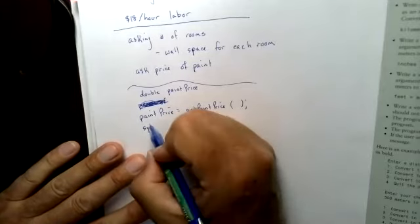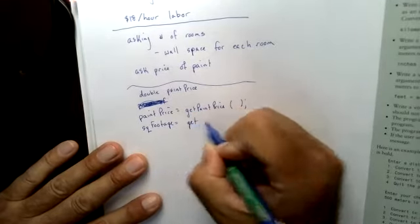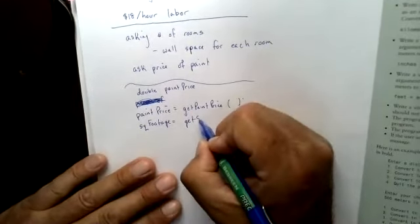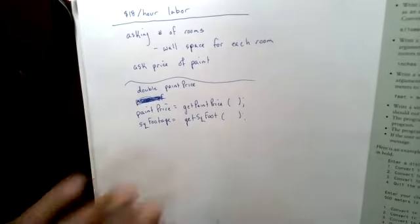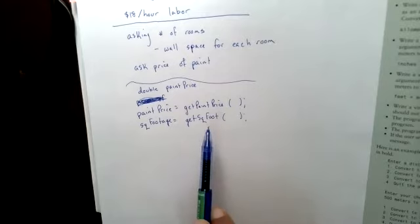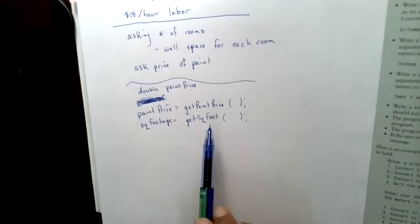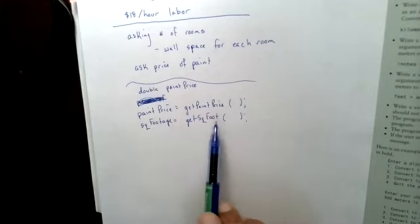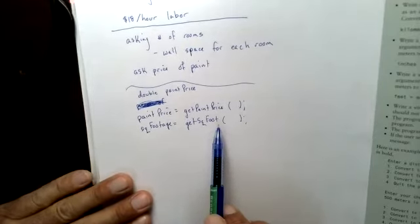Paint price. Get the paint price. Next thing I need is this total square footage. So I'm going to call a function, get, I might as well stay with the same thing so I don't get confused. Get square foot. Now, what am I doing in square footage? I'm going to ask how many rooms are there, and then I'm going to have a loop to ask the user to keep telling me how many total square feet there are. So this square footage is going to be for all the rooms. So there's going to be a little bit of work in this block of code.